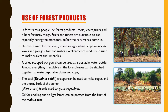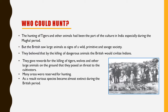Forest communities are totally dependent on forest products. In the forests there are also hunting animals. Hunting of tigers and other animals had been part of the culture in India, especially during the Mughal period. But the British saw large numbers of wild animals as a sign of a wild, primitive, and savage society. They believed that by killing dangerous animals, the British would civilize India, and they gave rewards for the killing of tigers, wolves, and other large animals on the grounds that they posed a threat to cultivators.